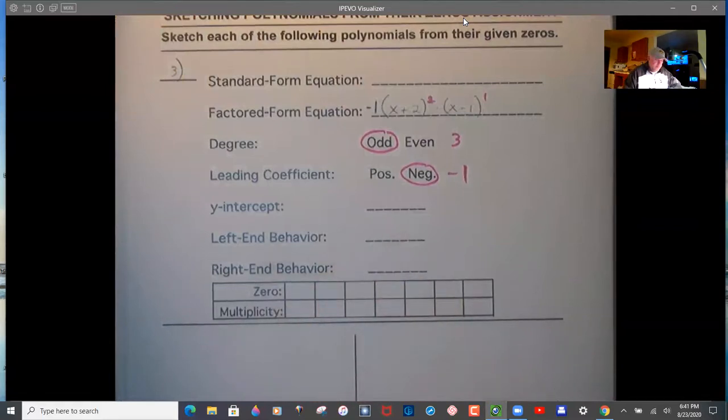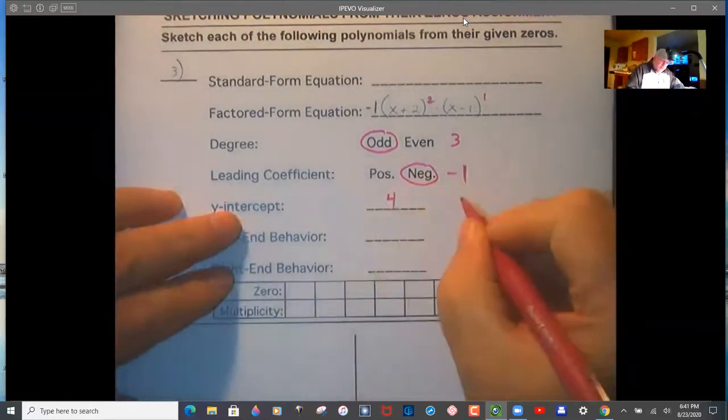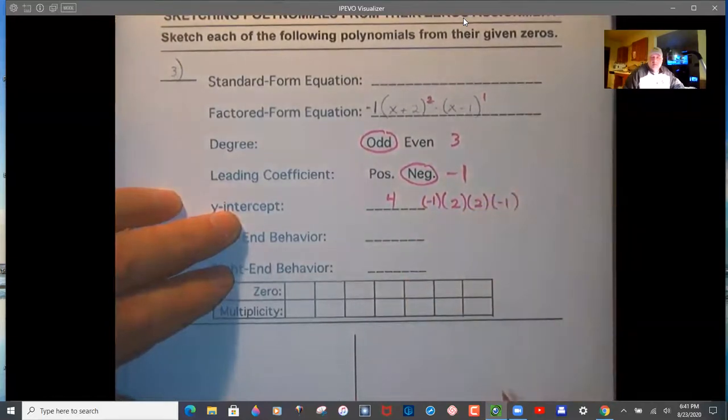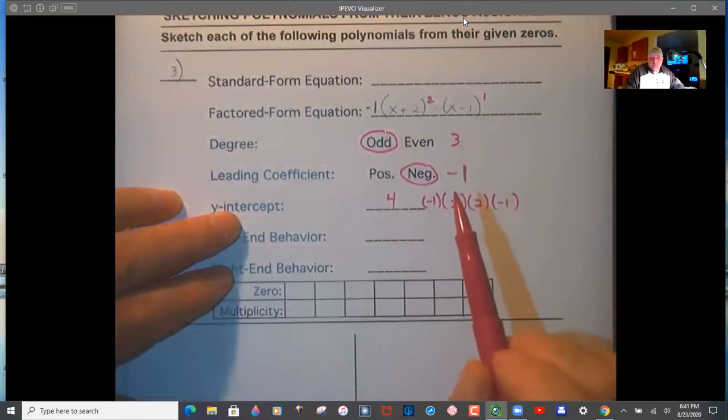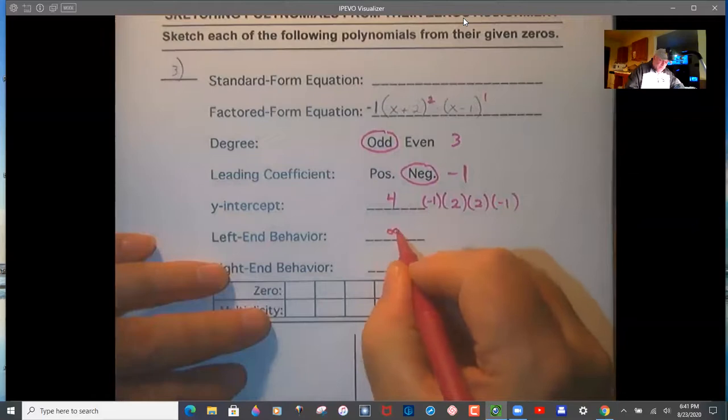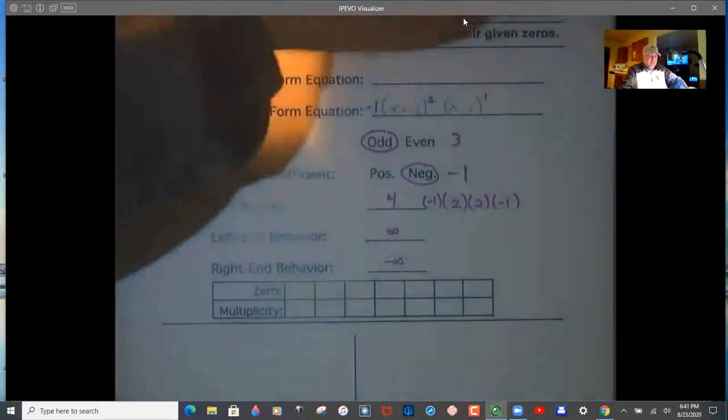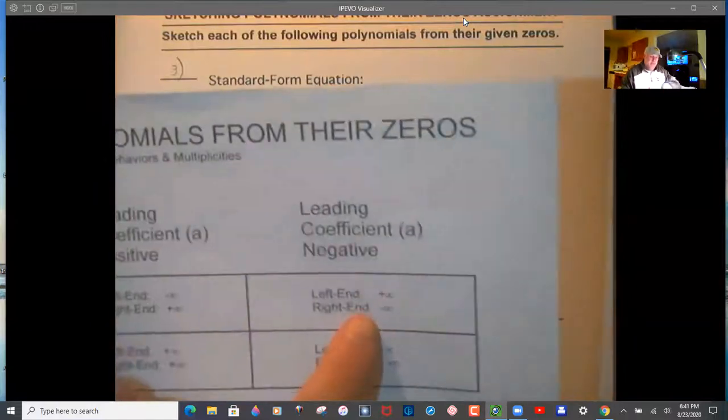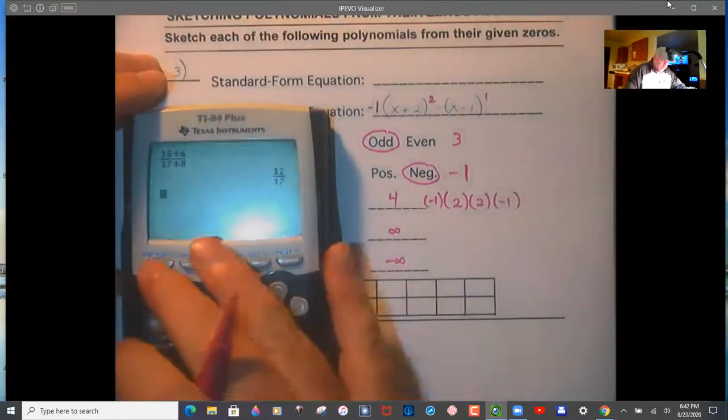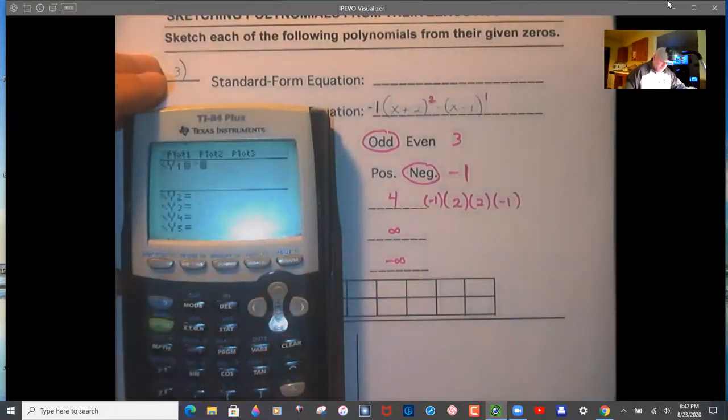Y-intercept is 4. How do I know? Because it's 2 times 2 times -1, and I can't forget the -1 in front. That -1 gets distributed through everything once you're done expanding, so it has to run through there. You're welcome to put this in and look at it from a table perspective. We have odd, negative. This is your end behavior.